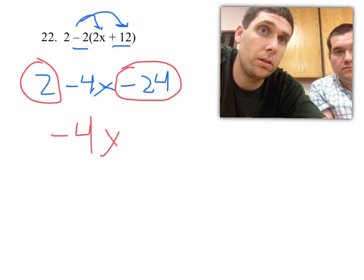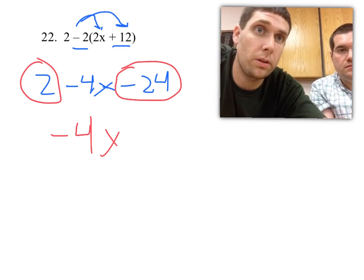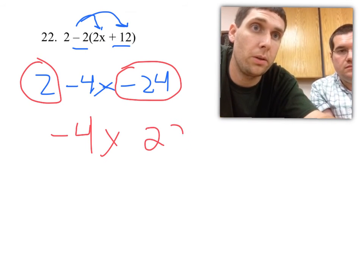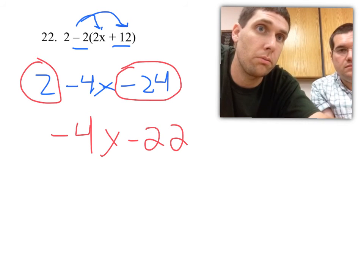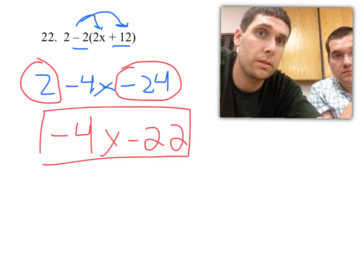Positive 2, negative 24, different signs, difference, subtract. 2 and 24 would be 22. And we know it's a minus 22 because there are more negatives. There's 24 negatives, only two positives. Answer, negative 4x minus 22.